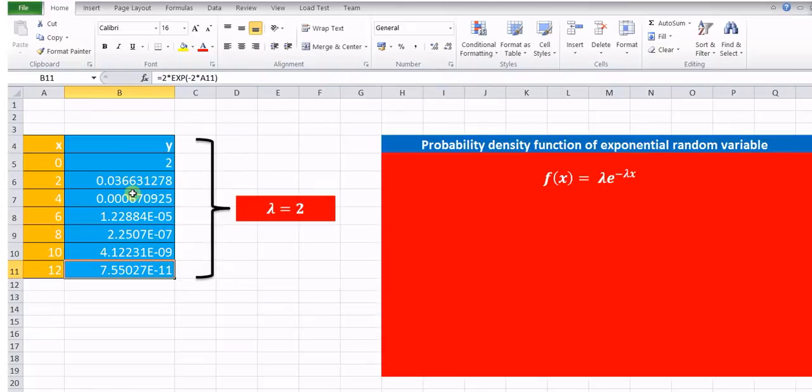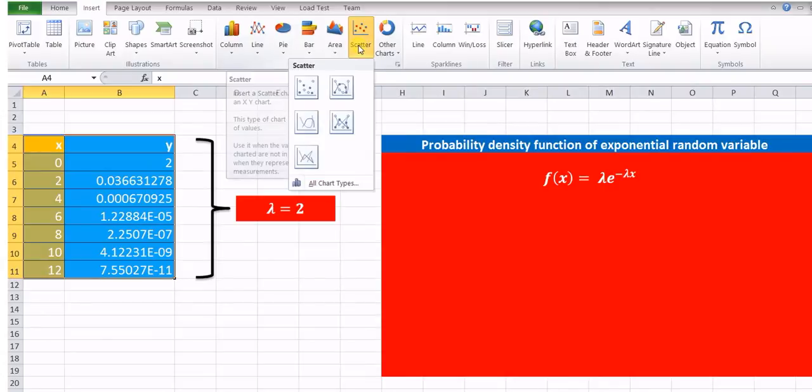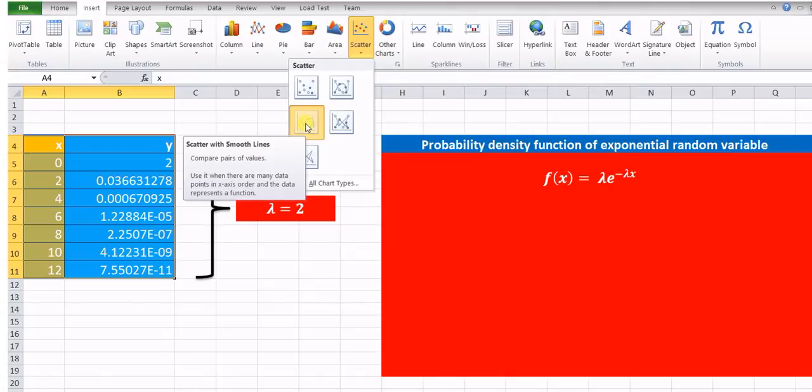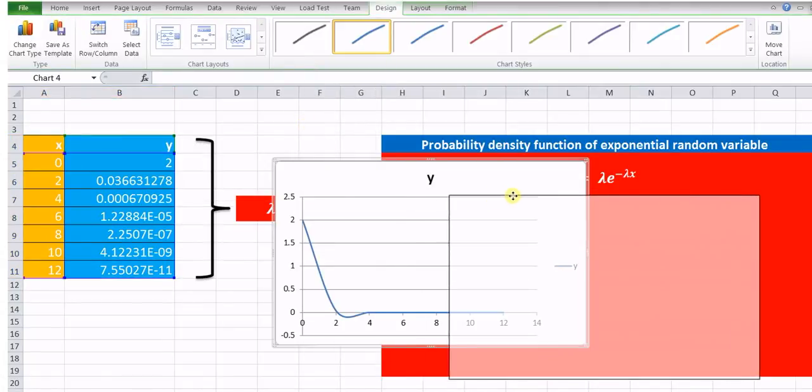And now we have to draw the probability density function for these particular values of x and y. First, we will select these values of x and y as it is. Go to the insert. Go to the scatter diagram. Scatter with smooth lines.